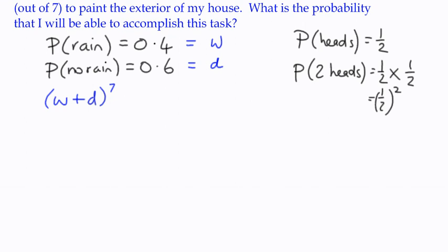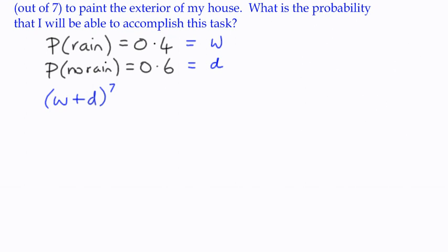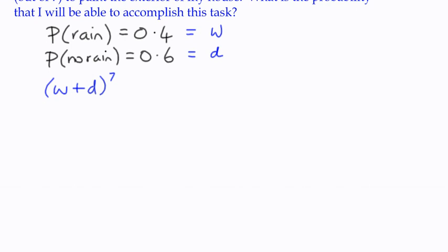So for each successive event, we can think of the probability being raised to a particular power. If I wanted to toss the coin three times, the probability of three heads would be a half to the power of three. So N is 7 in the power here is an indication that there's 7 consecutive events happening.